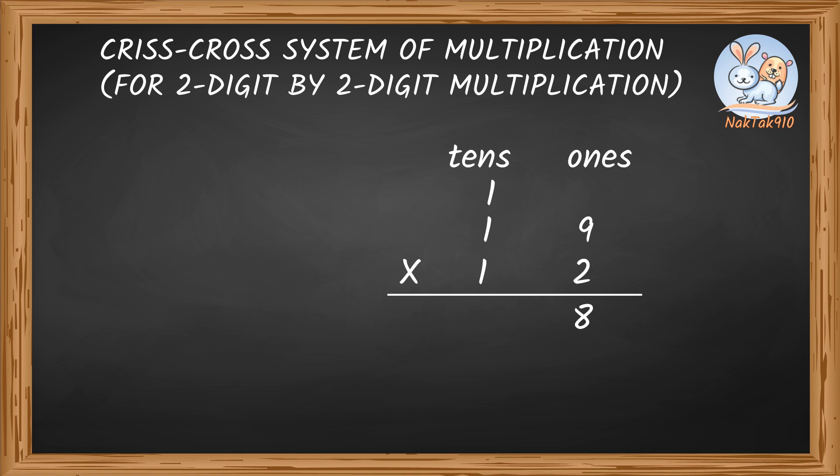Then criss-cross multiplication and addition. 1 times 9 is 9. 1 times 2 is 2. Adding both the products, which is 9 plus 2 equals 11. Let's add the number carry in the 10's place. Equals 11 plus 1, which is 12. Write 2 in the 10's place of our answer. And the carry is 1.